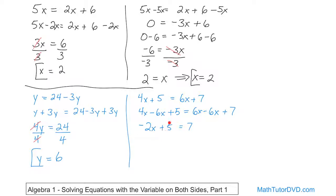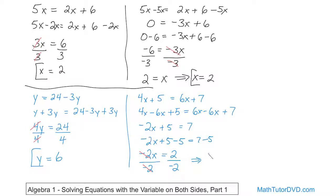Now we work from outer to inner. We want to get rid of the positive 5 first, so we subtract 5 from both sides. On the left, the 5's go away and you just have negative 2x. On the right, 7 minus 5 is 2. Now, to get x by itself, we divide both sides by negative 2. The negative 2's cancel, and on the right, 2 divided by negative 2: 2 divided by 2 is 1, and since you have opposite signs, it's going to be negative 1. That's the rules of division — negative 1 is the answer.